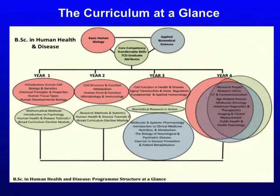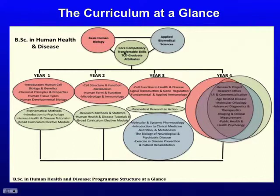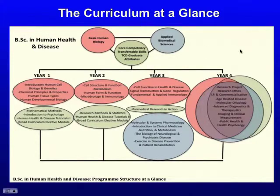This slide shows how the curriculum all fits together — don't worry about the small writing. There are three different colored circles. The pink represents basic human biology — particularly in the first two years there's a lot of focus on that, covering basic anatomy, physiology, and things like that. The olive green represents the skill sets you would acquire: in first year, mathematical methods and psychology, tutorials, and broad curriculum; in second year, research methods and statistics and more tutorials. In years three and four, things really start to come together, with the gray circles representing applied biomedical sciences — applying the knowledge gained throughout the degree. In the fourth year, it's very heavily focused on the research project in the second semester.